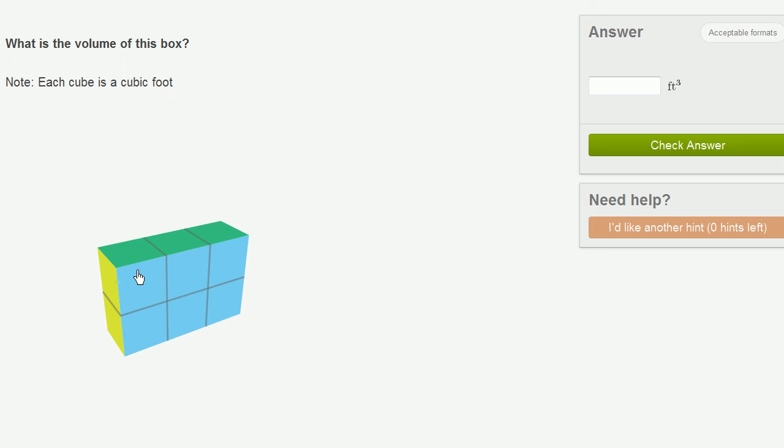The entire shape has one, two, three, four, five, six cubic feet in it. So the volume of this entire box is six cubic feet. And you see right here, the unit has feet, and it has a superscript here of three. This is feet to the third power. You could view this as feet times feet times feet, or cubic feet.